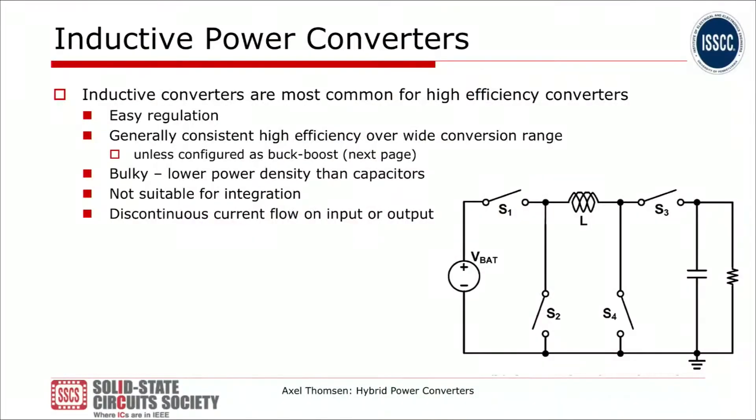Let's first talk about inductive power converters. They are most common for high efficiency converters and offer easy regulation. They generally offer consistent high efficiency over a wide conversion range, except maybe the example of the buck-boost converter, which I will talk about in the next couple of pages. They tend to be bulky, have lower power density than capacitors, are not very suitable for integration, and they offer discontinuous current flow on input or output. Those are problems that we would like to address.